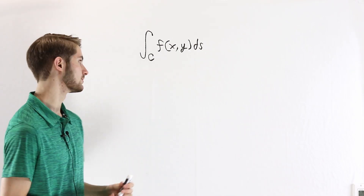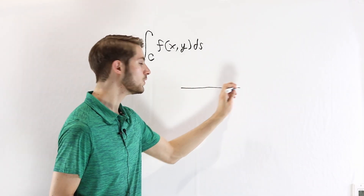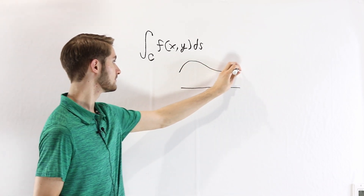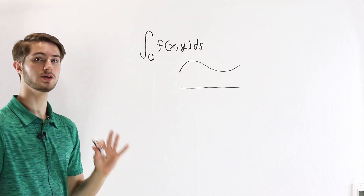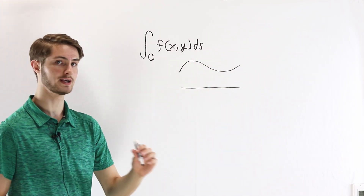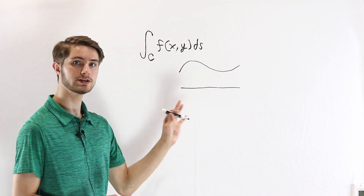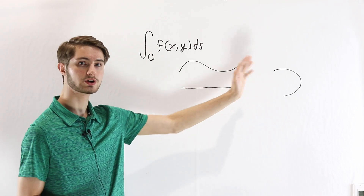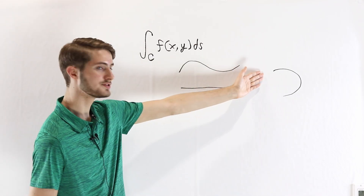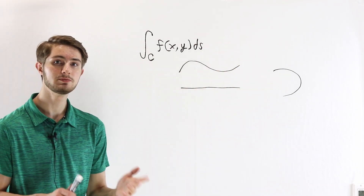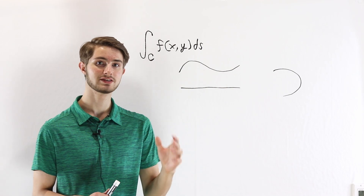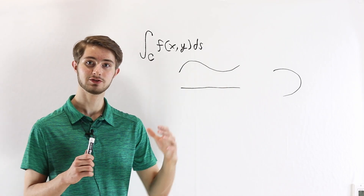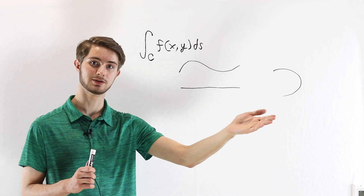With an ordinary integral, we integrate over a one-dimensional length and find the area of some curve that sits on top of that one-dimensional length. Line integrals generalize this idea and allow us to integrate with an input curve that exists in multiple dimensions. This becomes very useful when we want to study, for example, the behavior of a particular function on the boundary of some region.